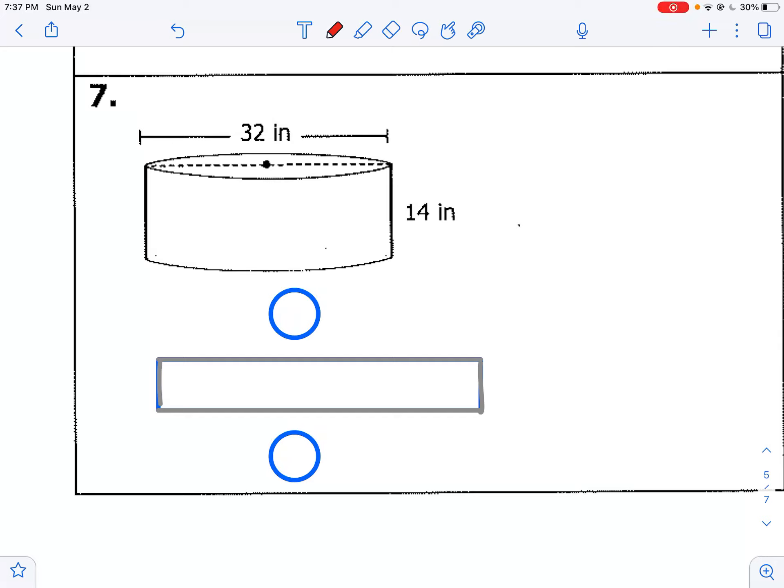Hey, welcome back. Today we're going to talk about how to find the surface area of a cylinder. So this is the area of all the flat surfaces around a cylinder.